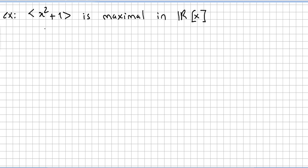Another example: the ideal generated by the polynomial x² + 1 is maximal in the ring of polynomials with coefficients in the reals. Let's check that. We assume that A is an ideal of the polynomials with coefficients in the reals.